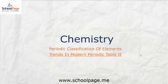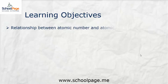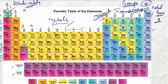In 10th CBSE chemistry, chapter: periodic classification of elements. In this video you're going to learn about the relationship between atomic number and atomic size. Observe this — along the period the atomic number increases: 19, 20, 21. As we move along the period we see that the atomic number increases. Atomic number is nothing but the number of protons.